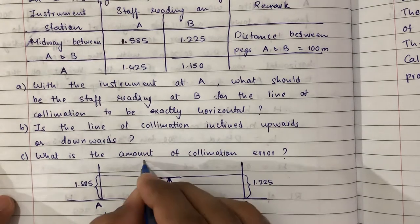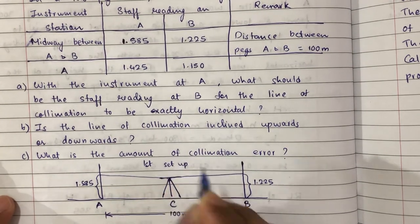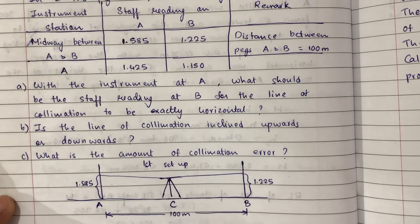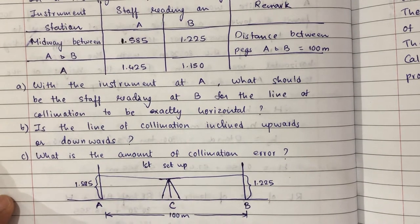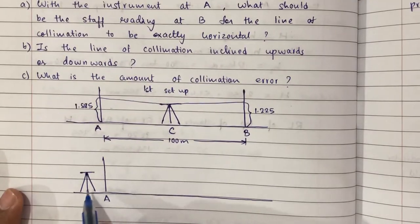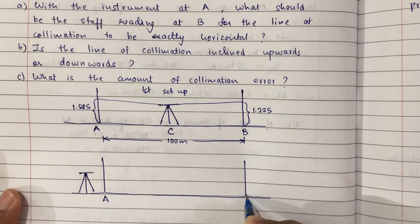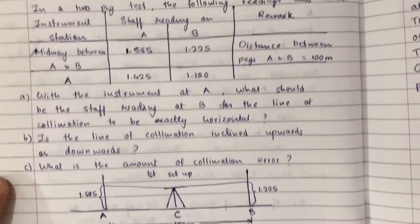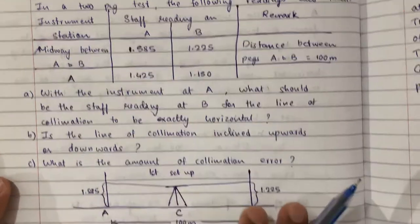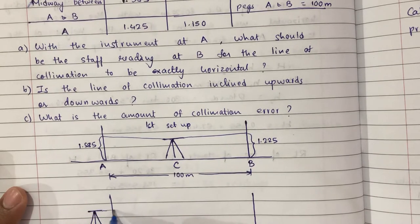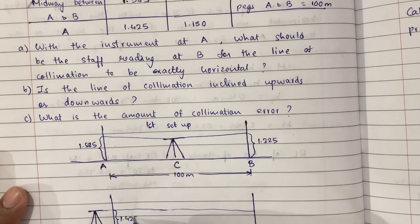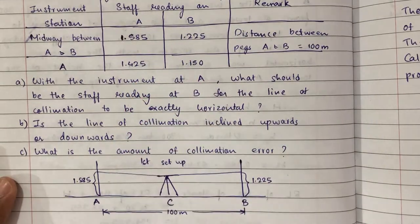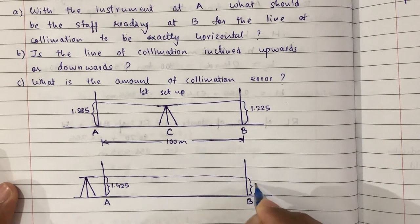In the second setup, the instrument station is near A. When the instrument station is at A, the staff reading at A is 1.425 and the staff reading at B is 1.15.